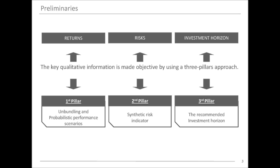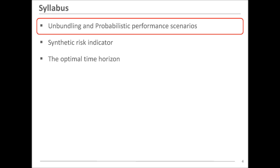In this class, qualitative information will be redefined in a quantitative way using probability theory, in order to give you three pillars — three main references that you can use as a retail or institutional investor to decide what product to buy. Let's start with the first pillar: price unbundling and probabilistic performance scenarios.